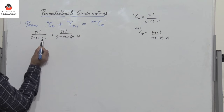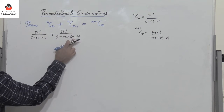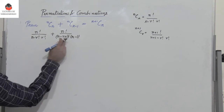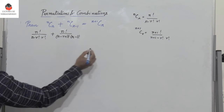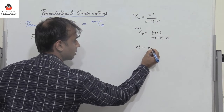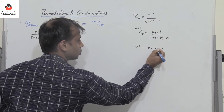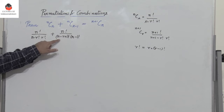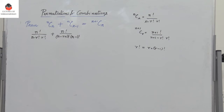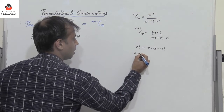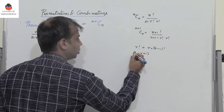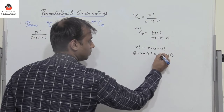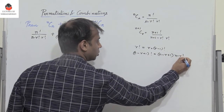Now let us observe: in the first term we have R factorial, and in the second term there is (R minus 1) factorial. So let me convert R factorial to involve (R minus 1). We know R factorial equals R into (R minus 1) factorial. Similarly, (N minus R plus 1) factorial can be written as (N minus R plus 1) into (N minus R) factorial.